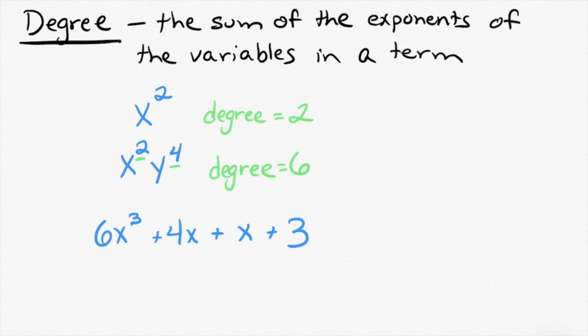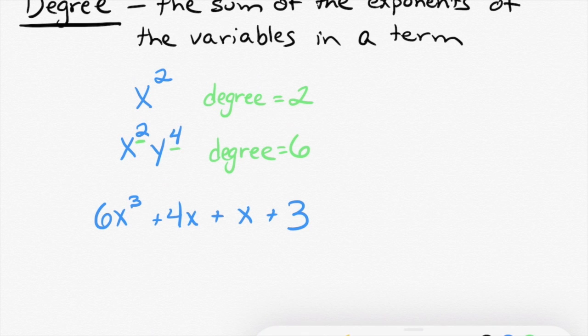My question is, what number is in front of the x cubed? I actually don't want you to tell me the whole degree yet. I want you to tell me the degree of each individual term. So the first term is 6x cubed. Can you tell me the degree of that? That's a third degree term.